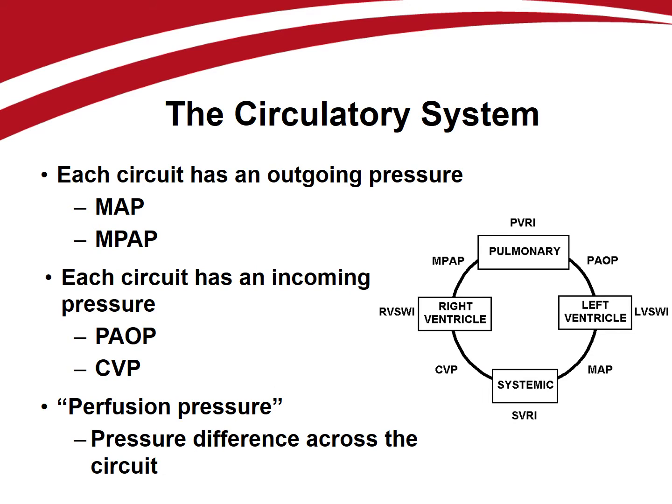So we now know how to calculate the pressure generated by each pump — this is the outgoing pressure for each circuit. For each circuit, there is also an incoming pressure. We use this pressure to assess the first of the key hemodynamic monitoring questions: what is the patient's preload? For the systemic circuit, the incoming pressure is central venous pressure. For the pulmonary circuit, the incoming pressure is the pulmonary artery occlusion pressure. The pressure difference across the circuit is known as its perfusion pressure, which is vitally important in shock resuscitation.